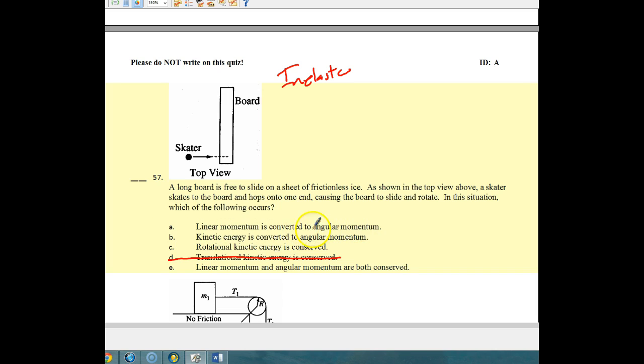Both linear momentum and angular momentum will be conserved in a closed system. Linear momentum is converted to angular? No, that's not how it happens. Kinetic energy is converted into angular momentum? That one is also not correct. Rotational kinetic energy is conserved? That one's not right because typically in an inelastic collision, we don't conserve that. So our answer has got to be letter E. Linear momentum and angular momentum are both conserved. That is the answer. And so we are done with number 57.